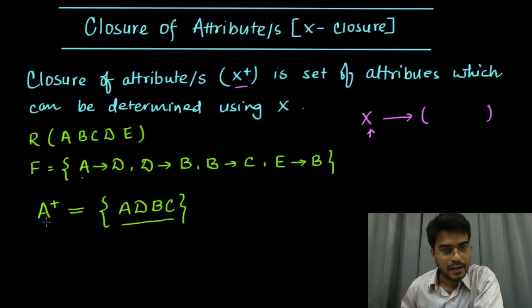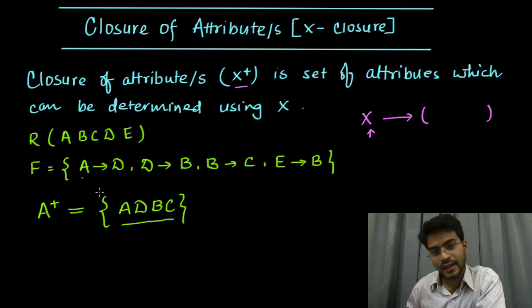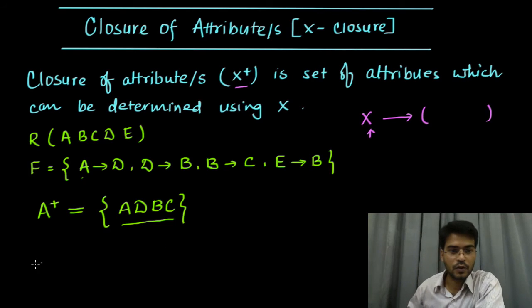Now I am asking who are the persons A knows, including himself, and of course directly or indirectly. Then the collection of persons A knows directly or indirectly is closure of A. So let us find out closure for B and D.